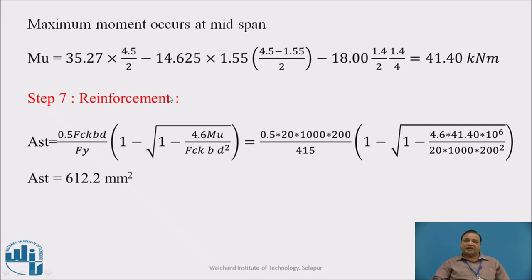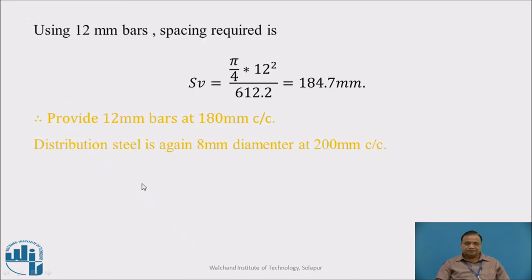The reinforcement is determined using 0.5 fck BD upon fy into 1 minus square root of 1 minus 4.6 MU upon fck BD square. Substituting all values, we get AST equals 612.2 mm square. The spacing of bars is area of 1 bar times 1000 divided by 612.2, which is 184.7mm. Provide 12mm bars at 180mm center to center. Distribution steel is again 8mm diameter at 200mm center to center.